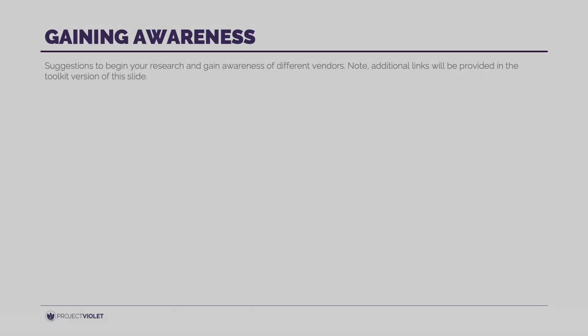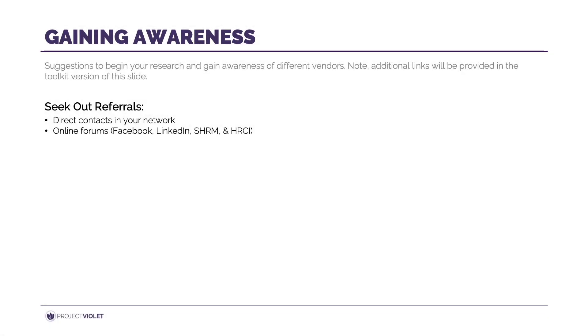There are a lot of vendors out there and it can be overwhelming to know where to start. Referrals are always the best place to start — tap into your network of professionals in people ops or HR. If you don't have one, join a network; there are free groups on Facebook and LinkedIn. You can also join a professional society like SHRM or HRCI, which have forums and resources to get you started on what's out there.